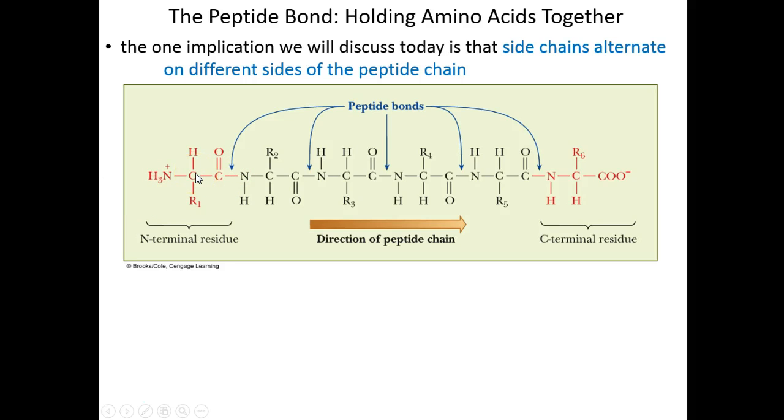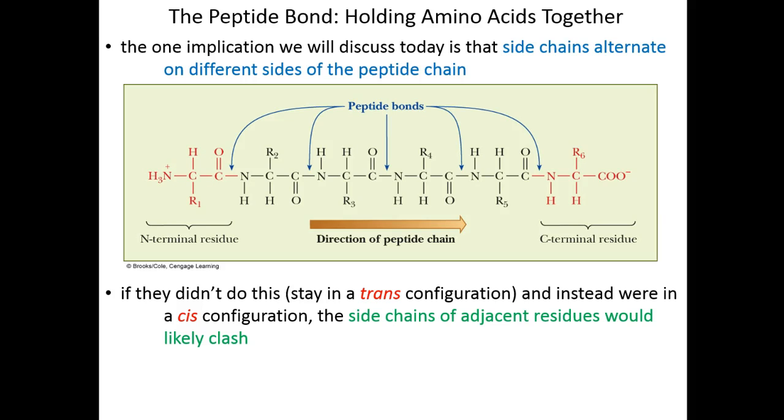These side chains are fixed in those orientations because there's no free rotation around the peptide bond. This is called a trans configuration, and side chains are always in trans for large peptide chains. If they were in a cis configuration, on the same side, we'd have potential for steric interference.